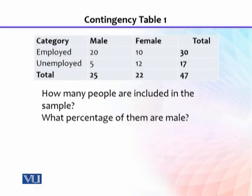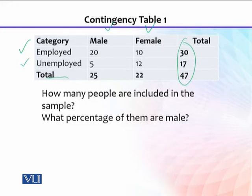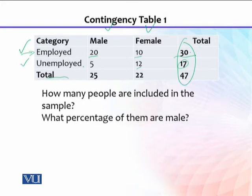Here is an example of a contingency table or cross tabulation. There are two basic variables. In one variable, we asked about people's employment category, divided into two categories: a person can be employed or unemployed. The other variable is gender — a person can be male or female. The last row and column show the totals. The total is 17, there are 12 males and 5 females; employed total is 30 and 17 are unemployed, giving a total of 47 people.